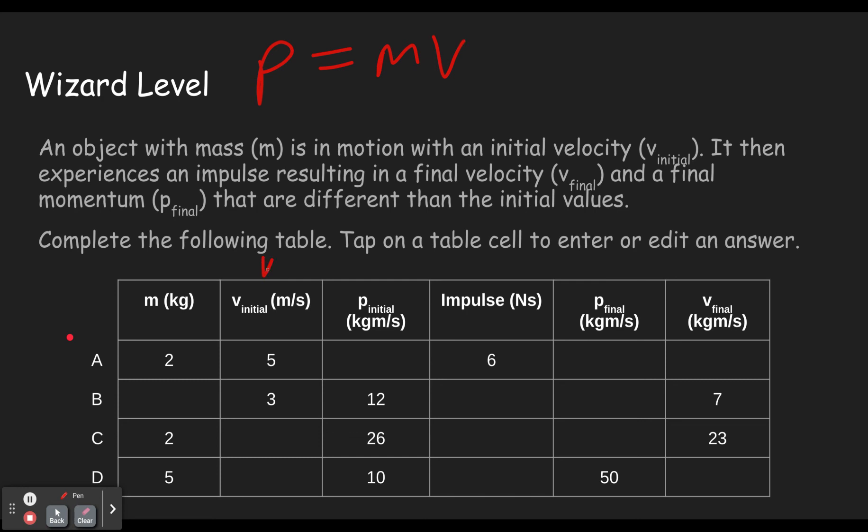So if we're dealing with both velocity initial and momentum initial, we can use this equation. Or when we're using p final and v final. But don't mix them up. Don't do v initial and p final. That wouldn't work, because you've got to be at the same time and the same instant. So then we have to go through and solve this.